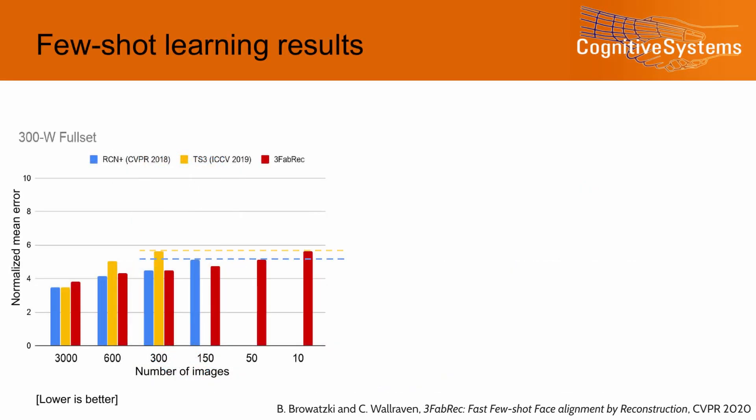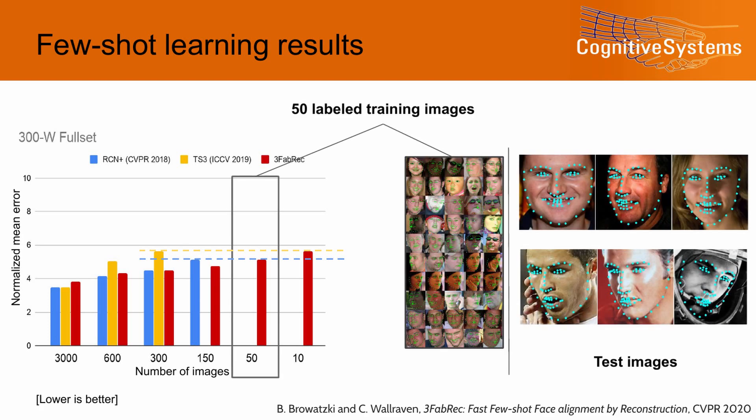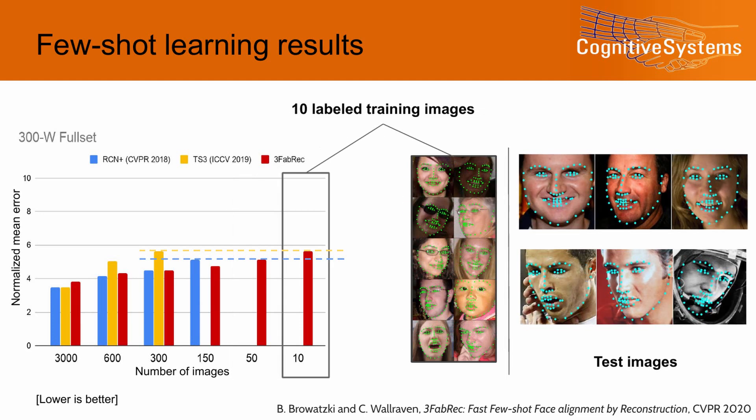Here we plot the performance of our and other recent semi-supervised face alignment methods on the task of landmark detection from limited training data. If the number of annotated training images is reduced, detection performance generally decreases, which corresponds to an increase in normalized mean localization error. In contrast to other state-of-the-art approaches, 3FabREC is able to exploit its implicit face knowledge and generalizes well from even a few labeled training images. With only 50 training images, we still achieve highly accurate localization results. Even with only 10 training images, our results are comparable to previous methods using a lot more images.